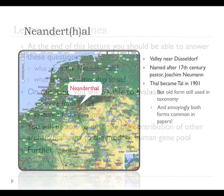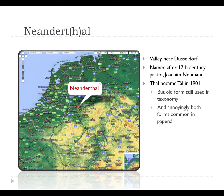What does 'Neanderthal' mean? Neanderthal is the name of a valley near Düsseldorf in Germany, named after a 17th-century pastor whose name was Joachim Neumann. They decided to turn his name into Greek and call it 'Neander' — Neumann in Greek — and named that part of the valley, which became known as the Neander Valley.